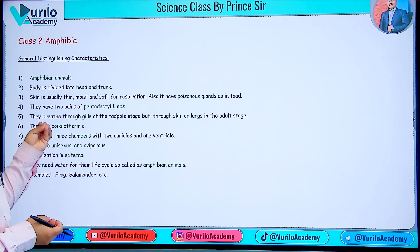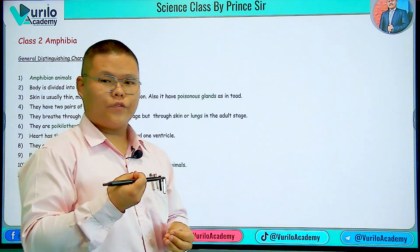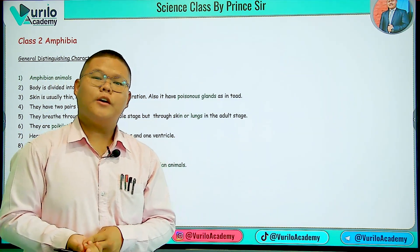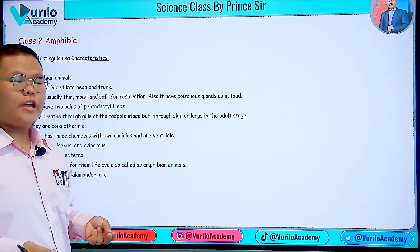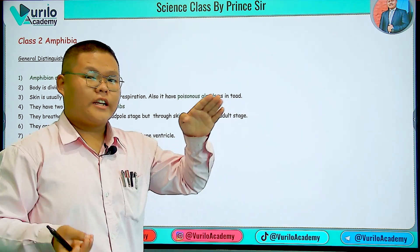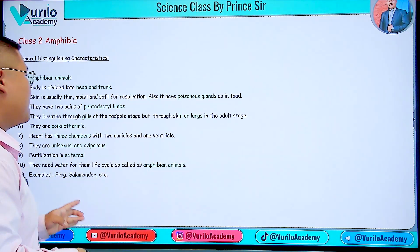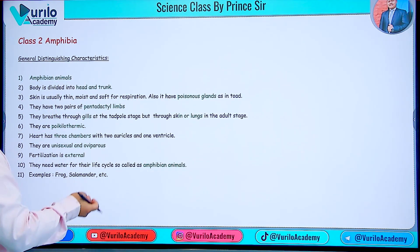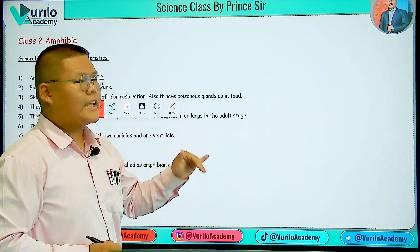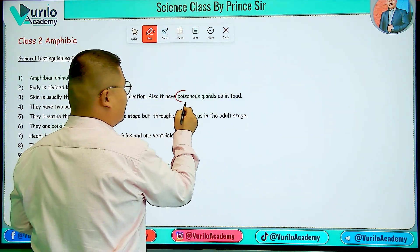An important point to note is that amphibians generally do respiration through skin. However, in the case of a frog, respiration can also occur through lungs — so both skin and lungs are used. Also note that poisonous glands are present in the skin — this is very important.